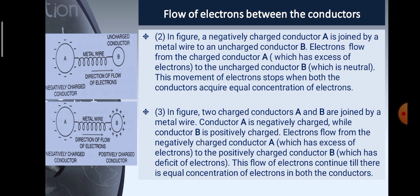In the next figure, a negatively charged conductor A is joined by a metal wire to an uncharged conductor B. Electrons flow from the charged conductor A, which has excess of electrons, to the uncharged conductor B, which is neutral. This movement of electrons stops when both conductors acquire equal concentration of electrons. In the bottom figure, two charged conductors A and B are joined by a metal wire. Conductor A is negatively charged while conductor B is positively charged. Electrons flow from the negatively charged conductor A to the positively charged conductor B, and this continues till there is equal concentration of electrons in both.